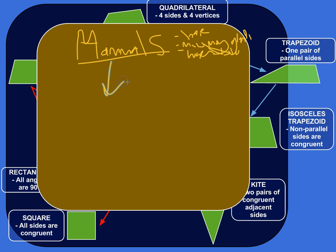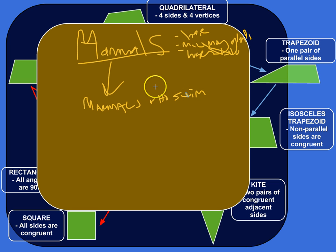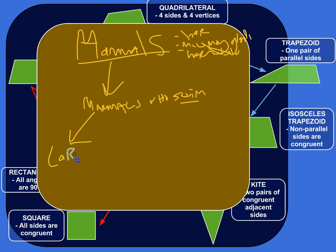if I draw an arrow down and say 'mammals who swim,' I have my subgroup here of mammals who swim. All these animals will have all the characteristics of mammals, but they'll also have the special characteristic that they swim. And then I could do another subgroup of the mammals who swim and are large — like whales. Whales are mammals who swim and are large.